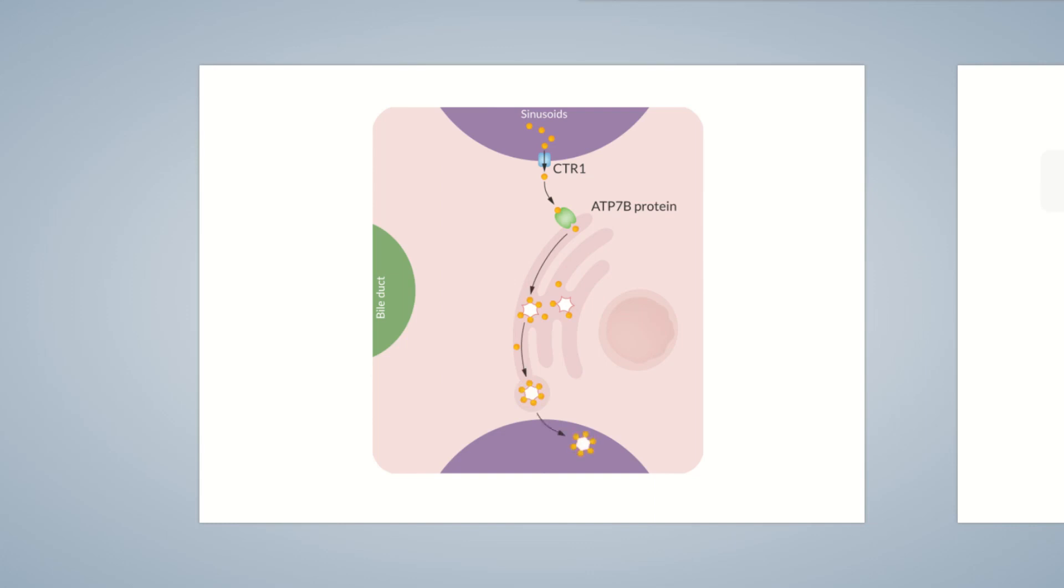Subsequently, ceruloplasmin exits the hepatocyte and can be transported to various organs by the blood. The majority of copper is transported to the rest of the body by the blood. A significantly smaller amount of copper can pass directly through the hepatocyte and is present in blood as free serum copper.